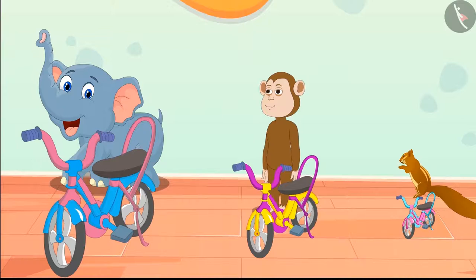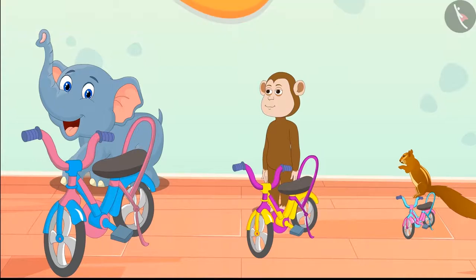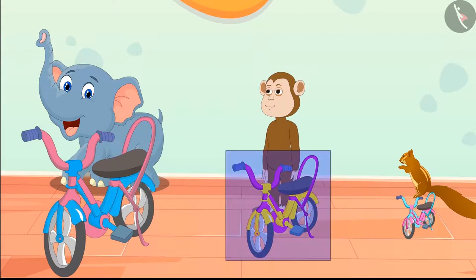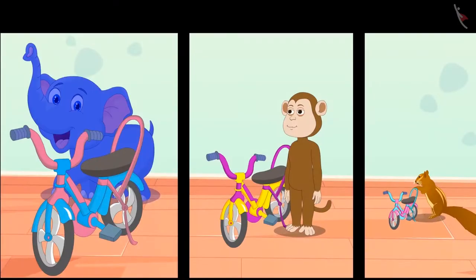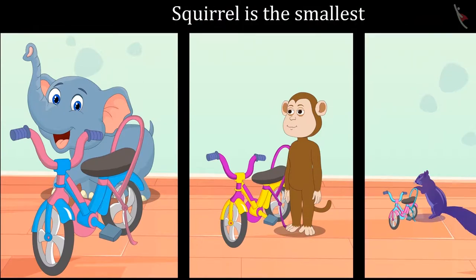So kids, can you tell which is the squirrel's bicycle? Yes, you thought right, children. The squirrel is the tiniest among those three animals and his bicycle is also the smallest — the squirrel gets the smallest bicycle. And this is the monkey's bicycle. The elephant is the biggest among those three friends, so he took the biggest bicycle, and the squirrel is the smallest, so he has taken the shortest bicycle.